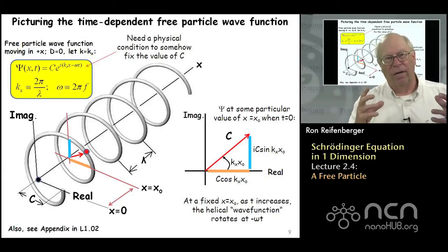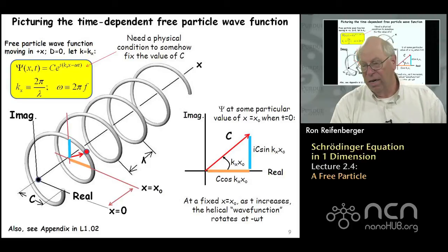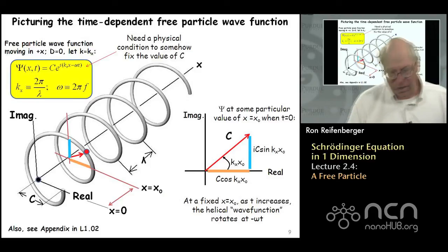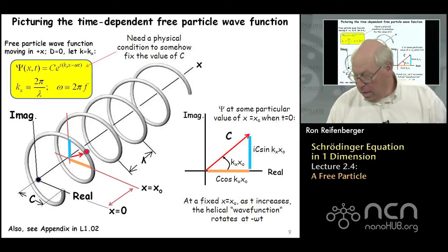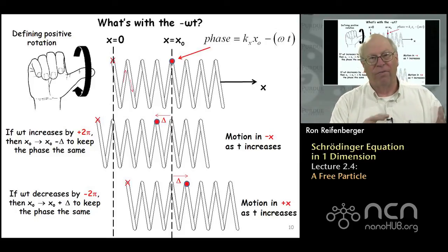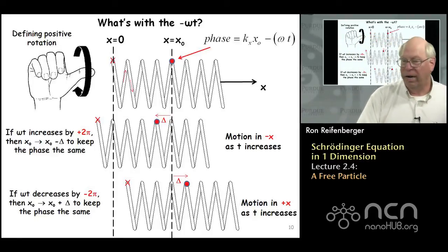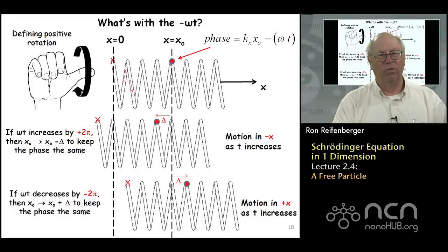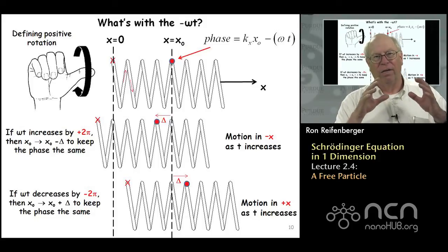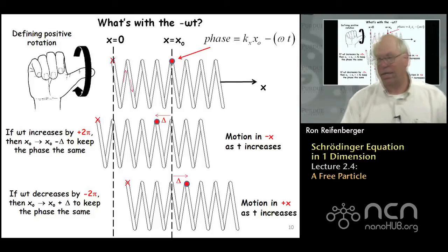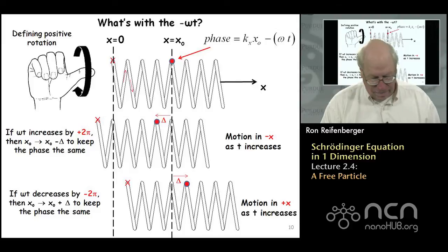To truly understand this — even though it's an incredibly simple form for a wave function — interpreting it requires some geometrical dexterity. The minus omega t in the phase of the wave function just guarantees that as time progresses, this form of the wave function moves in the positive x direction. So if you want a wave function that moves in the positive x direction as t increases, you need to include that minus omega t in the phase.